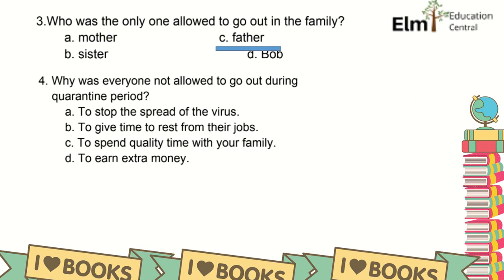Why was everyone not allowed to go out during the quarantine period? A. To stop the spread of the virus. B. To give time to rest from their jobs. C. To spend quality time with your family. D. To earn extra money. The correct answer is A, to stop the spread of the virus.